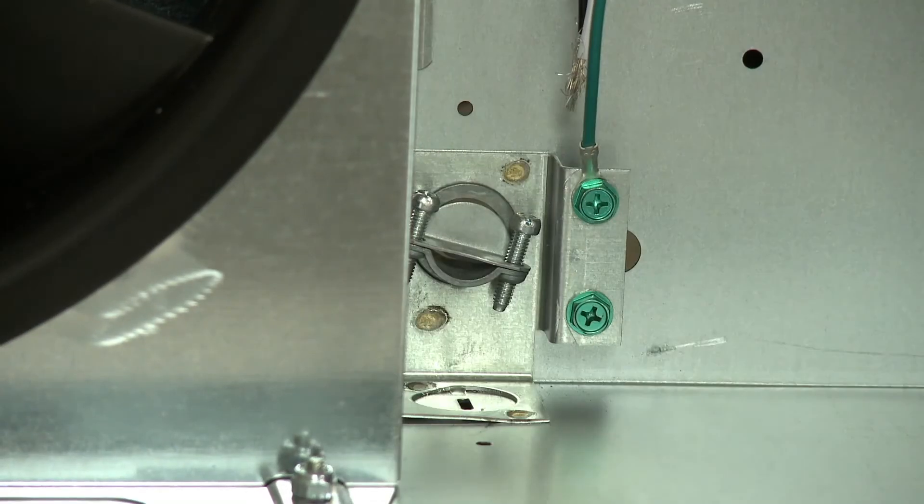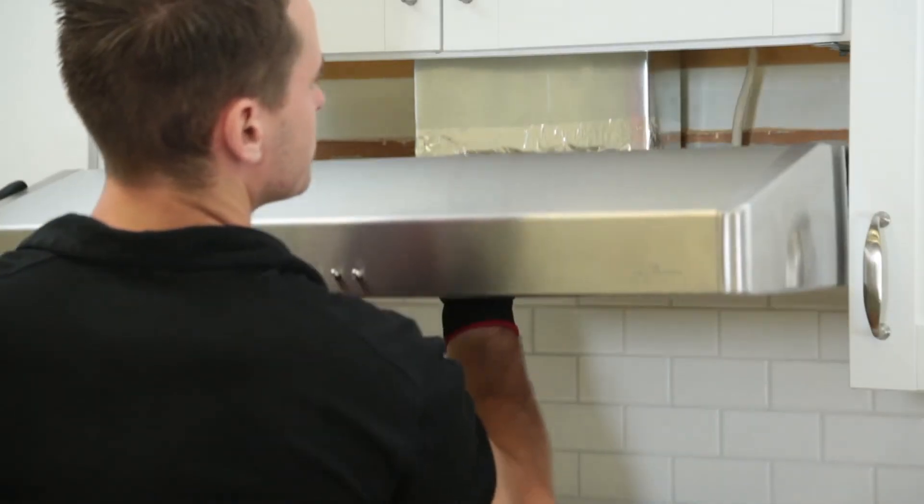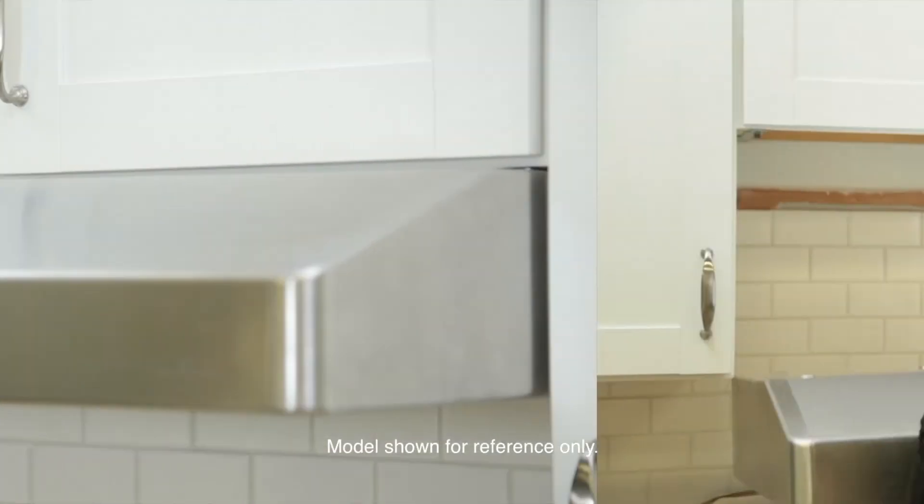Attach the strain relief to the hood, then pull the house power cable through. Simply slide the hood onto the EZ-1 brackets, which will hold the hood in place until you complete the installation.